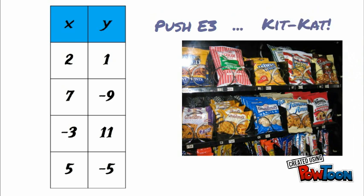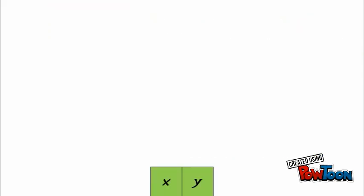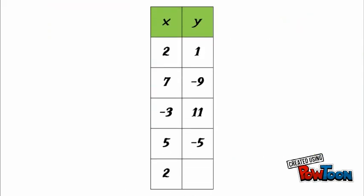And the machine will output a product. Now what would happen if we took this input-output table and tried to input 2 a second time? The first time we put in 2, it output 1 as Y. Will it output 1 as Y again? Aha, it did.